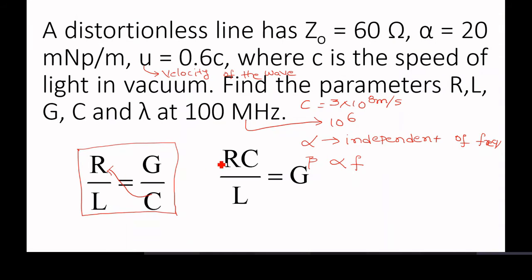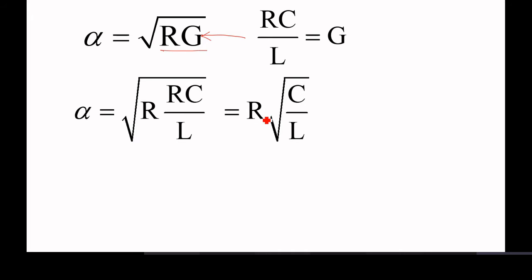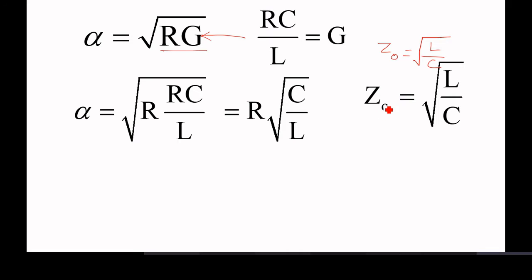We have to convert whatever equations we have in terms of characteristic impedance and wave velocity and alpha. For a distortionless line, alpha is nothing but square root of RG. In place of G, we are replacing RC by L. If you substitute, R square — R will come out — and R into root C by L. What is characteristic impedance for a distortionless line? It is nothing but square root of L by C. That's why we have converted this attenuation constant in terms of R and characteristic impedance.